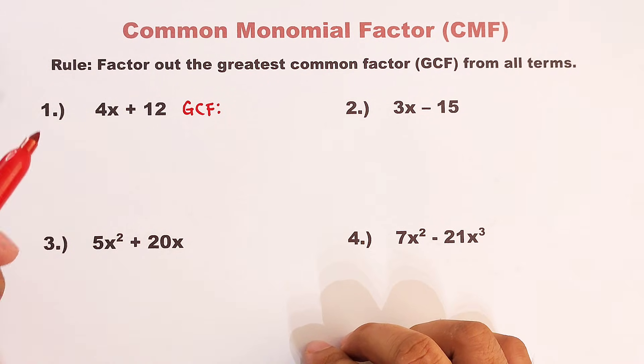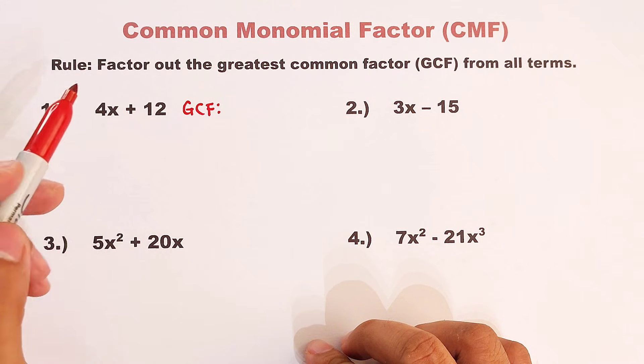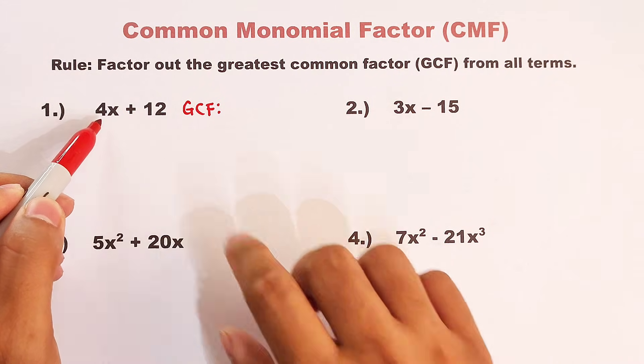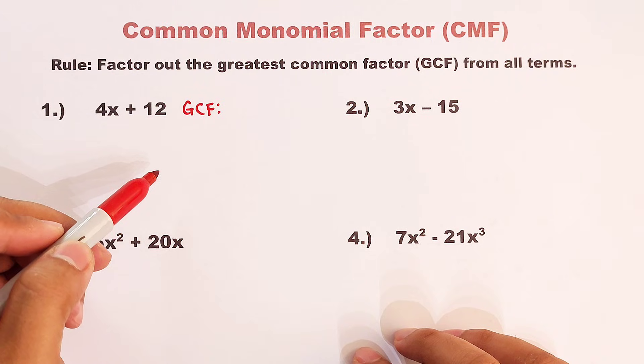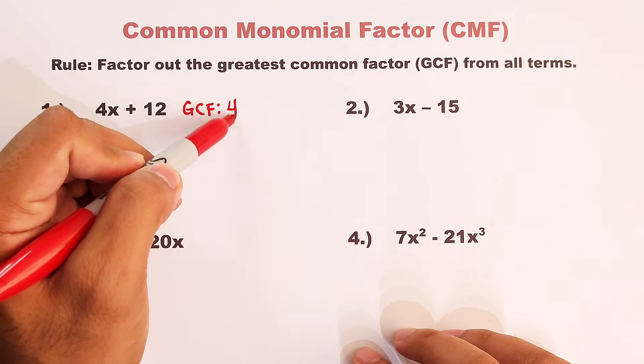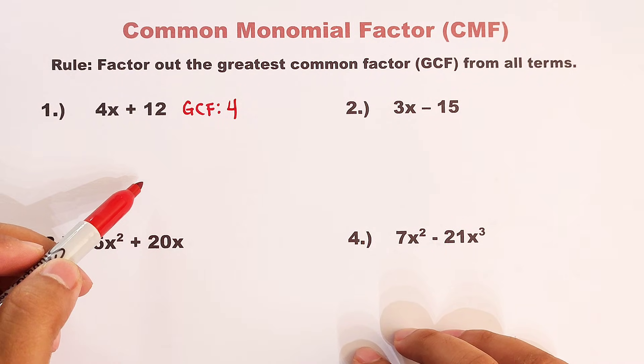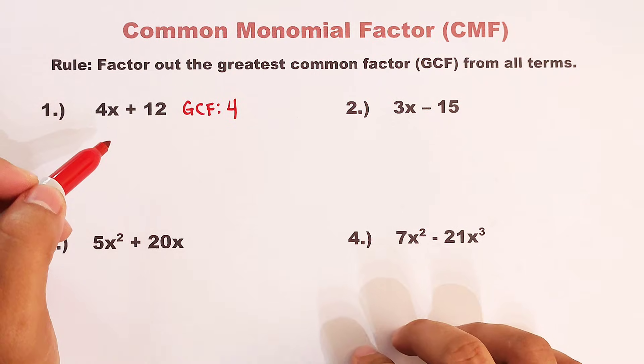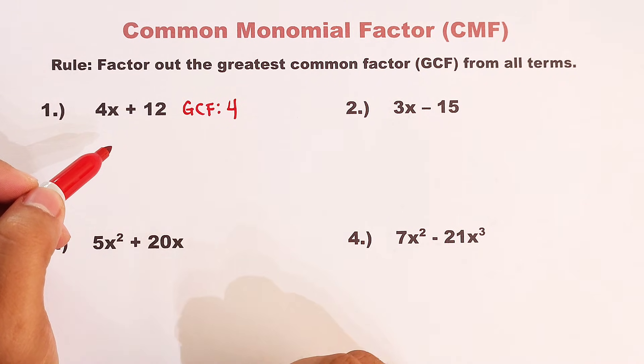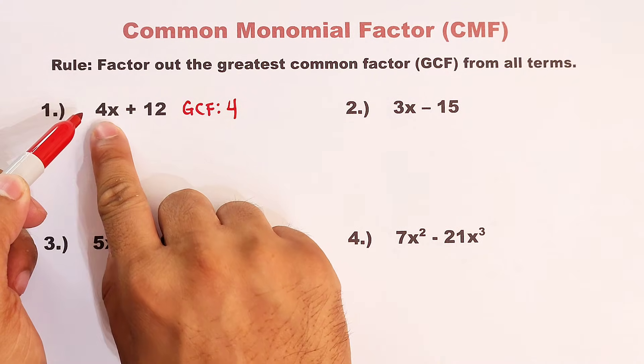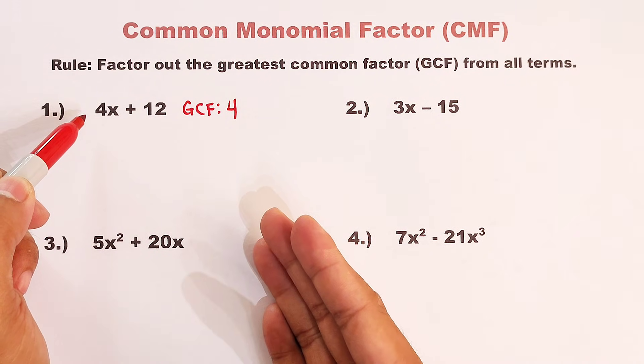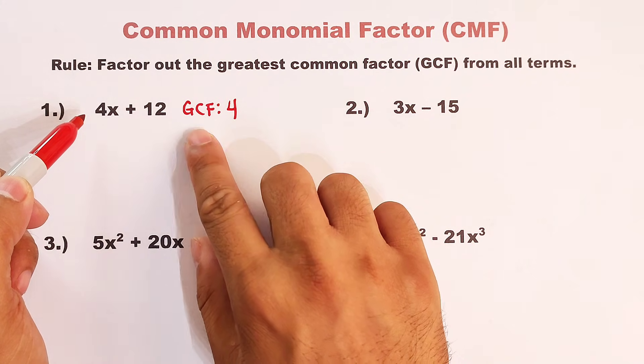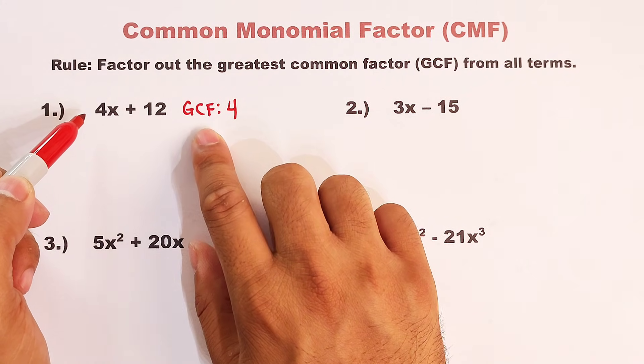So here's the tip. First, you need to know the factors or the GCF between the numbers 4 and 12. Okay, what is the greatest common factor? Definitely, the answer is 4. Now, as for the variables, you need to see whether the variables are existing in both terms. Here we have x and the second term we don't have the variable x, meaning the variable is not included in our GCF.